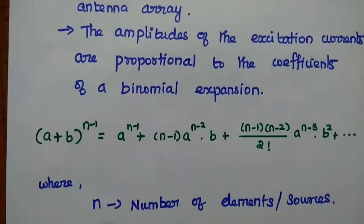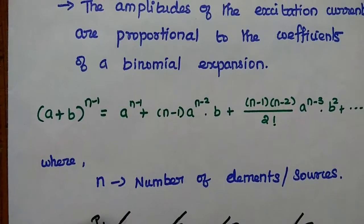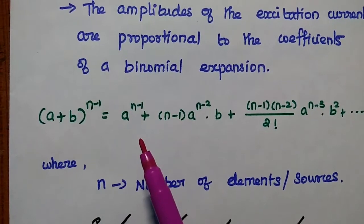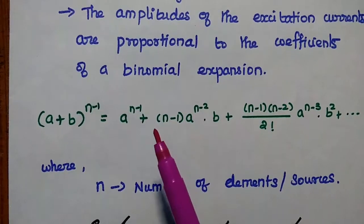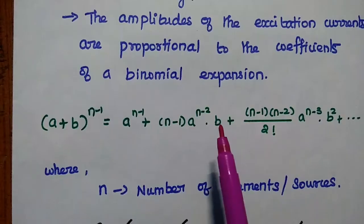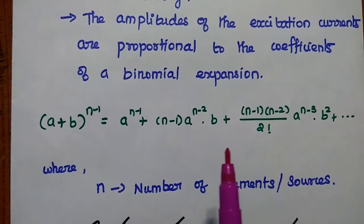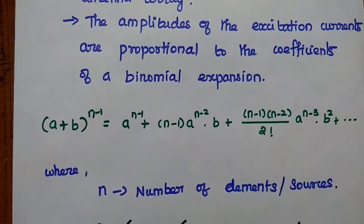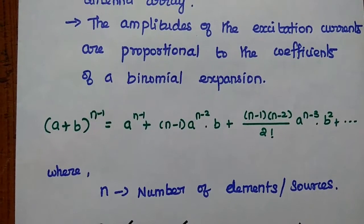Here we can consider one of the binomial expansions like this: a plus b to the power n minus 1 equals a to the power n minus 1 plus n minus 1 times a to the power n minus 2 times b. It is going on like that. Here, n represents the number of elements or the sources.